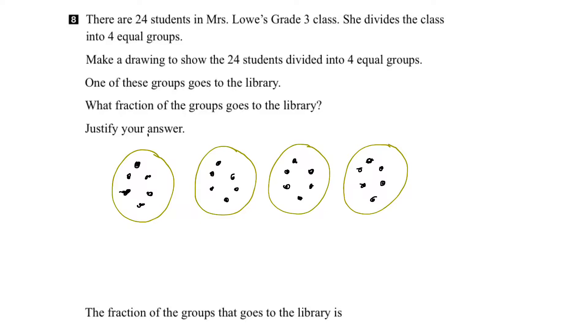So there are 1, 2, 3, 4 equal groups, and each group has 6 students in it.